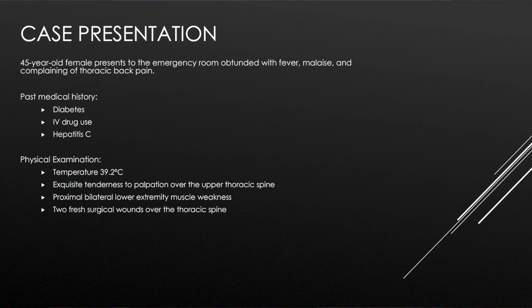On exam, the patient has a temperature of 39.2, tenderness to palpation of the thoracic spine, proximal bilateral extremity weakness, and also two fresh surgical wounds in the thoracic spine.